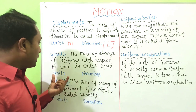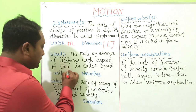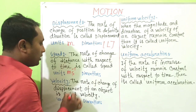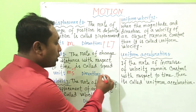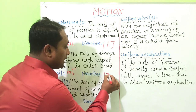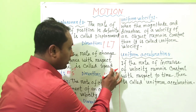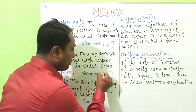The unit of speed is meter per second, and the dimension of speed is LT⁻¹.